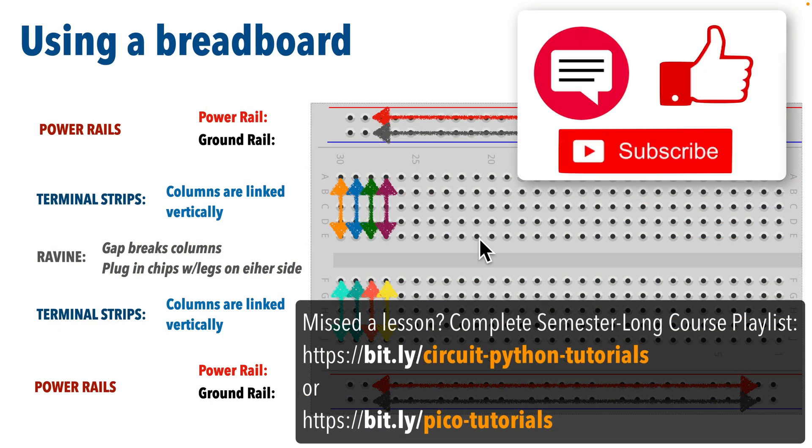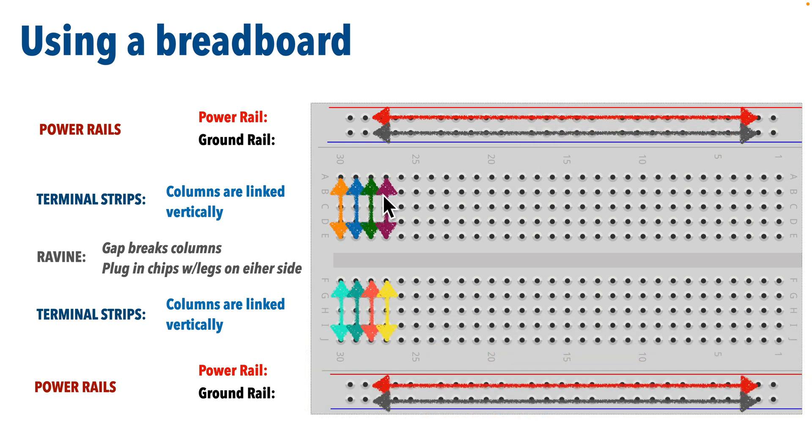As mentioned in a prior lesson, when you hold a breadboard this way, the vertical columns on either side of the center gap, which is called the ravine, are connected. The ravine separates them so the vertical connections don't cross the center line. These columns or vertical connections are sometimes called terminal strips.